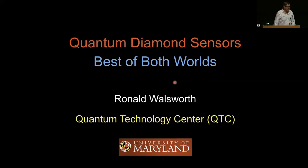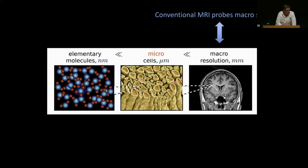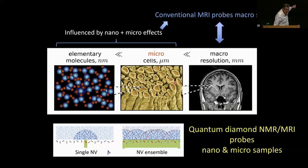I'm going to tell you about today a little summary of the NV diamond or quantum diamond sensors and how they are in some ways the best of both worlds. Conventional MRI probes macroscopic samples and is influenced by nanoscale and microscale or mesoscale effects. With our technology, we can use individual NVs a few nanometers away from the diamond surface to be able to probe at the nanoscale and dense ensembles of NVs to be able to do sensitive measurements of things that are at the individual cell scale.